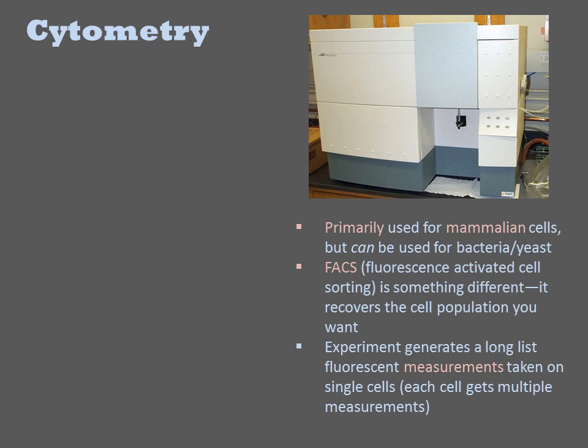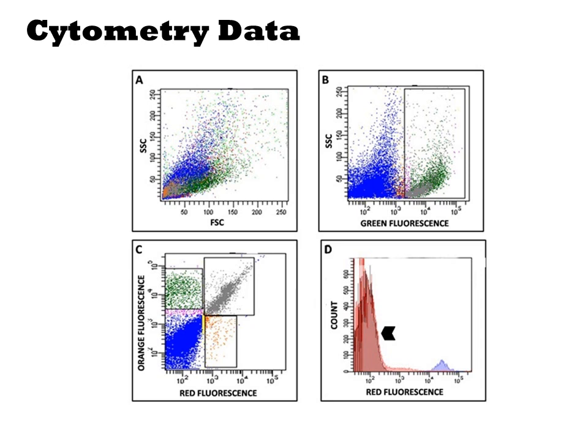Each event is accompanied by a forward-scatter, side-scatter, and fluorescence value presented as a number. It is very rare to look at the raw data from a cytometry run. There are typically 10,000 events or more in the dataset, requiring the use of visualizations to be meaningful. Here is a typical series of visualizations. Panels A, B, and C are each dot plots, while D is a histogram.